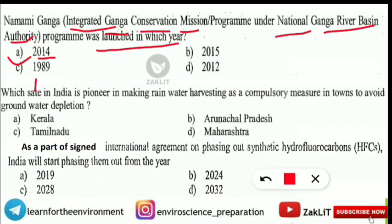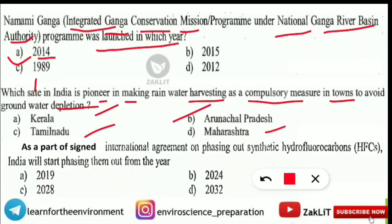The next question is: 'Which state in India is a pioneer in making rainwater harvesting a compulsory measure in towns to avoid groundwater depletion?' The options are Kerala, Arunachal Pradesh, Tamil Nadu, or Maharashtra. The correct answer is Option C — Tamil Nadu — which is the pioneer state for making rainwater harvesting compulsory.